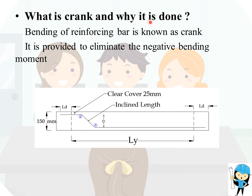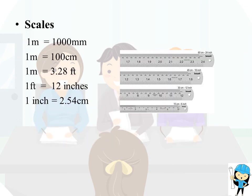Next question: what is crank and why is it done? Bending of a reinforcing bar is known as a crank. It is provided to eliminate the negative bending moment in the bars. The distance between the inclination is called the crank length, and it should not be less than 300 mm.